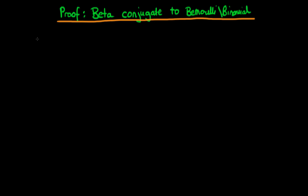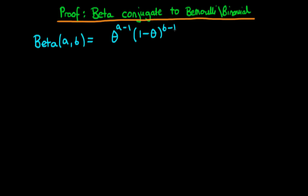So first of all let's write out what actually is a beta distribution. A beta distribution is defined by two parameters which I'm going to call a and b, and it's equal to theta to the power a minus one times one minus theta to the power b minus one, all divided through by a normalizing function which is called a beta function, which again takes these two parameters as an input.